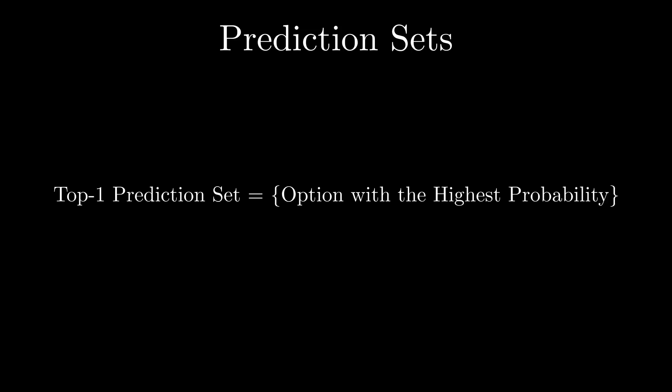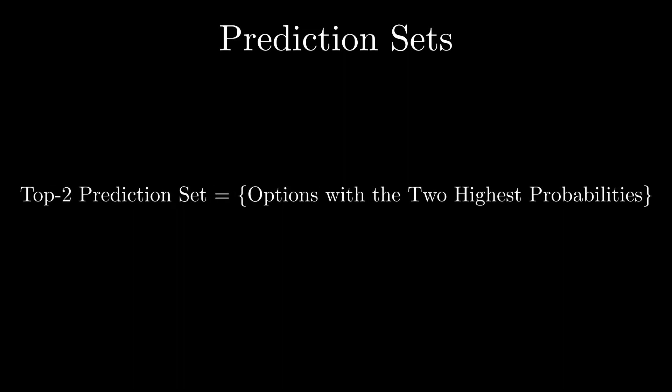Once we have these probabilities, we can construct various prediction sets to represent our model's final output. We can create a prediction set containing only the model's top choice, referred to as the top-one prediction set. We can go further by also including the model's second choice, forming the top-two prediction set, or even extend this to include the third choice, forming the top-three prediction set. For example, if we have 100 questions, we will produce 100 top-one and 100 top-two prediction sets.